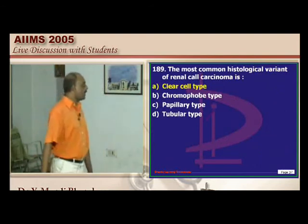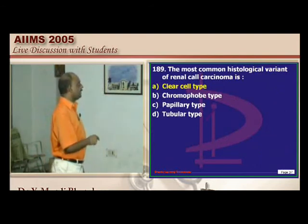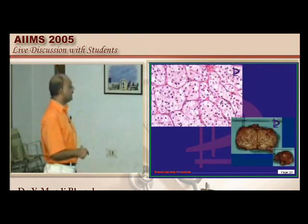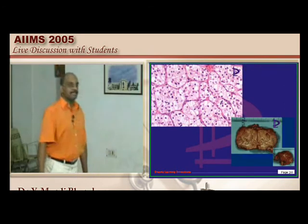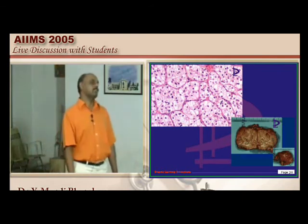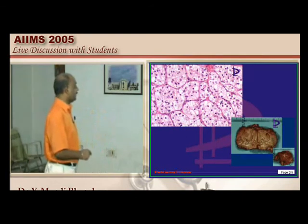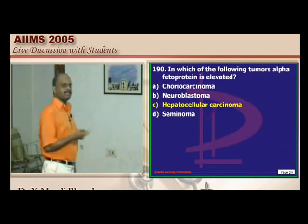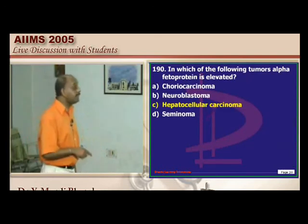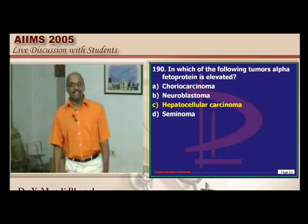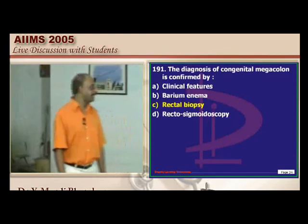The most common type of renal cell carcinoma is clear cell carcinoma — the cytoplasm is clear around the nucleus. Alpha-fetoprotein is elevated in hepatocellular carcinoma but is not elevated in the fibrolamellar variant.